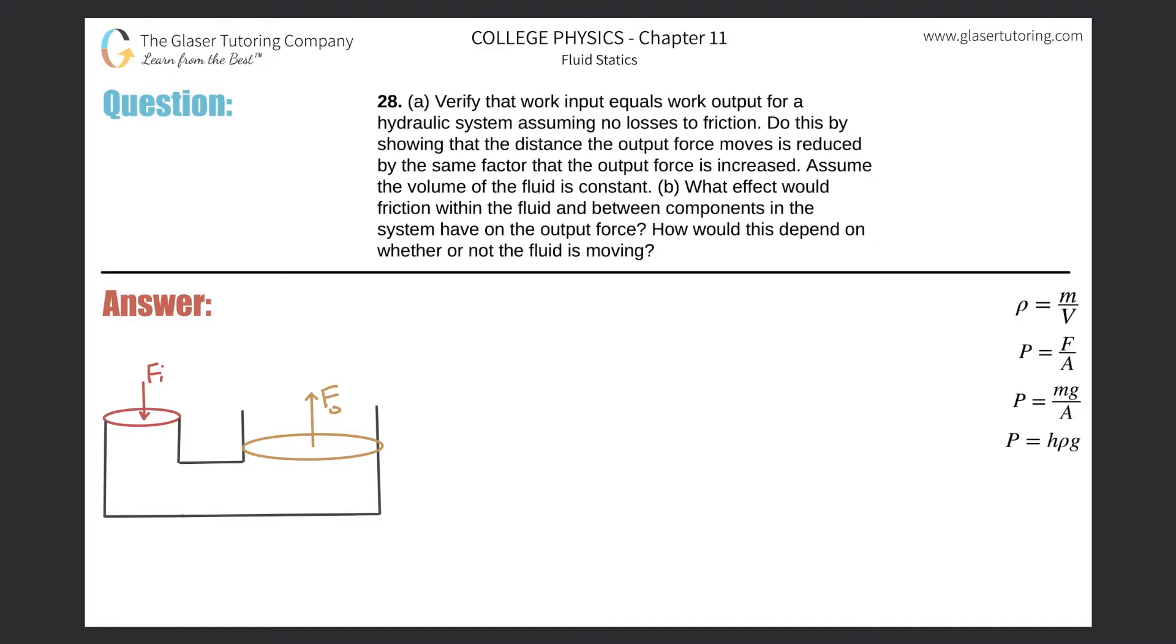Number 28, letter A: Verify that the work input equals work output for a hydraulic system assuming no losses to friction. Do this by showing that the distance the output force moves is reduced by the same factor that the output force is increased. Assume the volume of the fluid is constant.